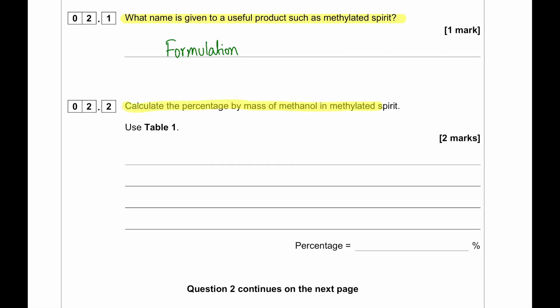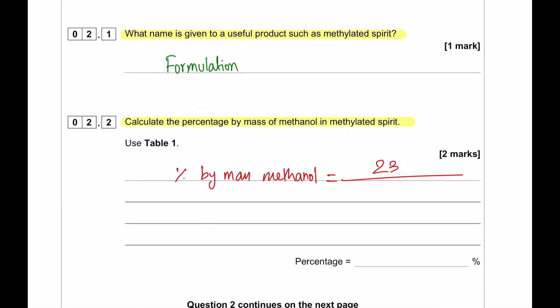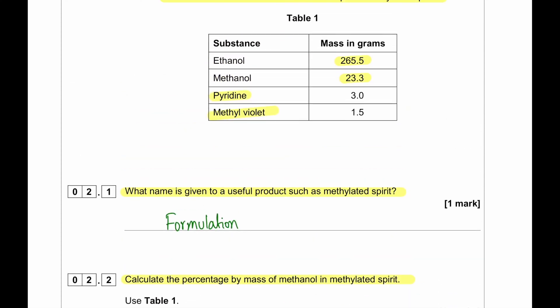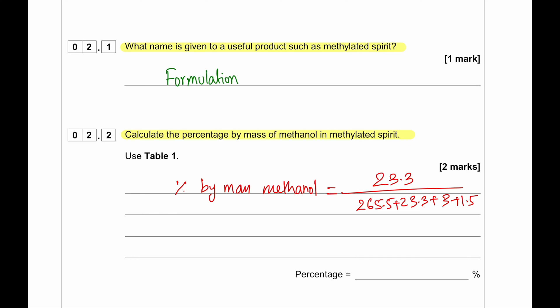Calculate the percentage by mass of methanol in the methylated spirit. So first of all, percentage by mass. So we have 23.3 and then we are going to add all of the masses. And then we are going to multiply this by 100%. This gives us 7.9%.